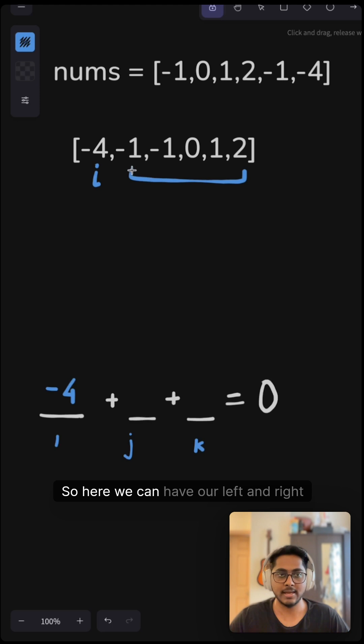Coming to this here, we can have our left and right pointers. So j and k could be our left and right pointers. With that, we can solve this.